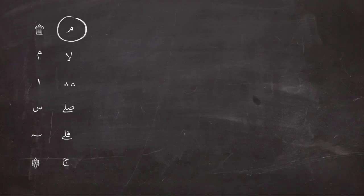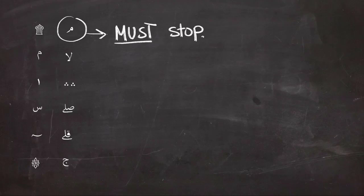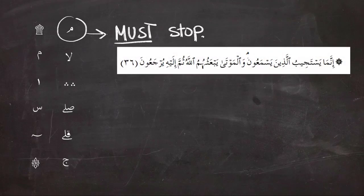We're going to start with the first one, a symbol that looks like meem, and it means you must stop while reading. Otherwise the meaning of the ayah or verse will change. In this example, you should stop at the symbol by reading, so we have to stop at the symbol of meem.